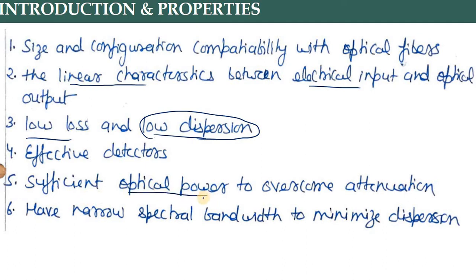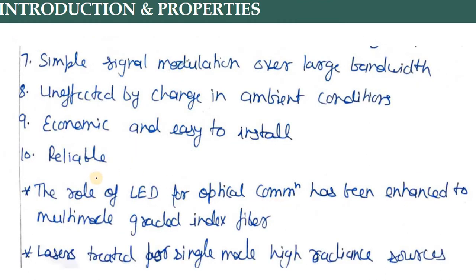Sufficient optical power is available, but in the case of lasers it is more, and in the case of LEDs it is less. Narrow spectral width — the spectral width is the relation between gain and frequency; it is least in the case of lasers. Simple signal modulation can be done easily. The devices are unaffected by ambient conditions like temperature and pressure. LEDs are cheaper while lasers are more expensive, but both are quite reliable.